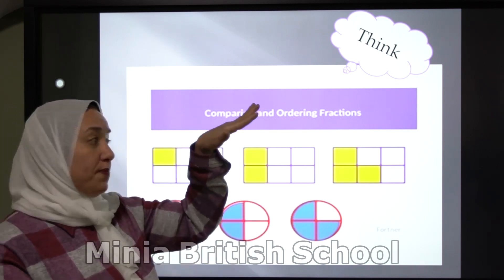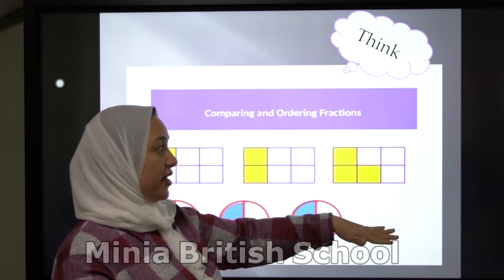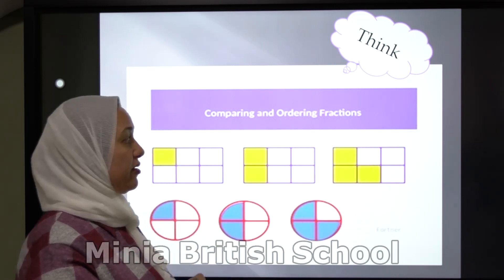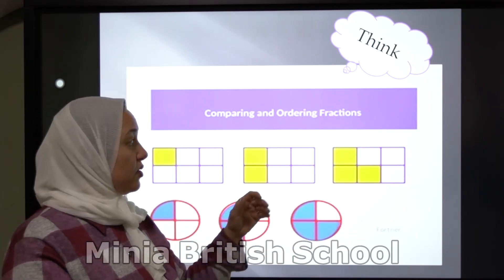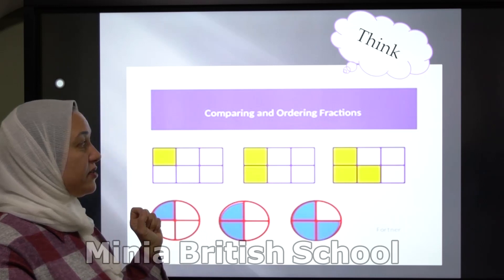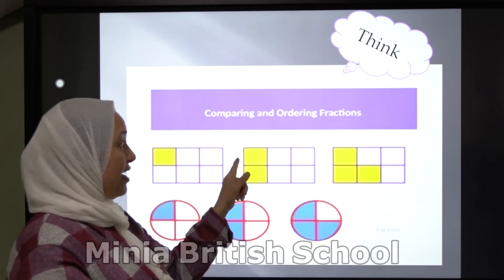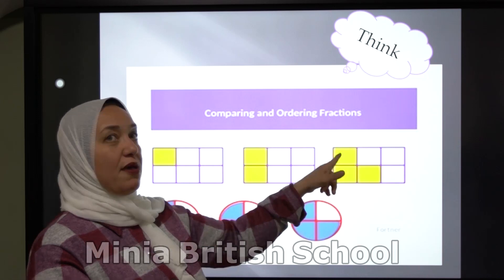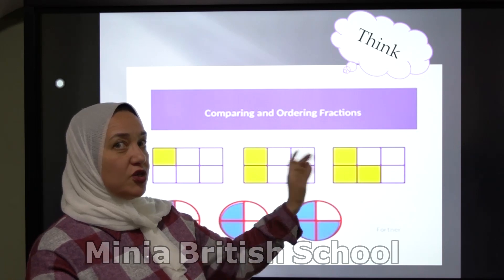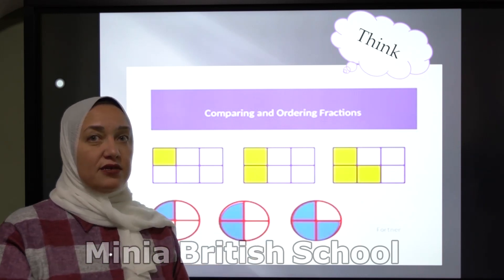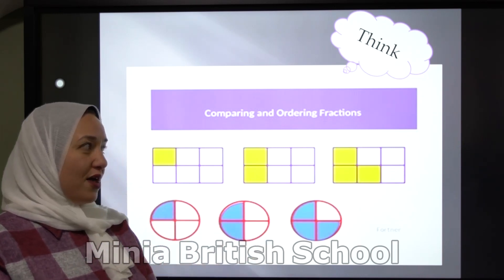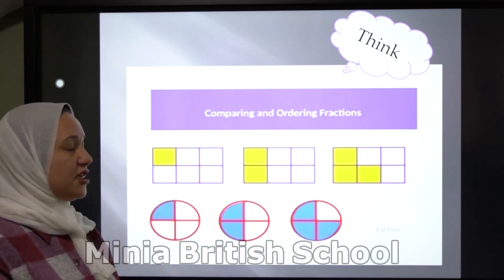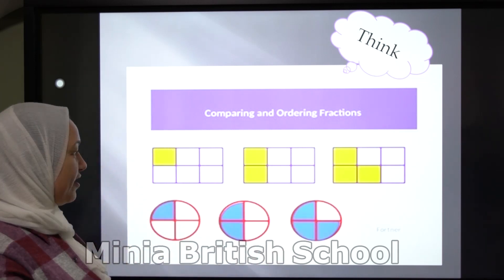The number on top is the colored part. The number on the bottom is all parts. Look at these figures — which one is bigger? 3 over 6 bigger than 2 over 6, or 2 over 6 bigger than 3 over 6? Yes, it's 3 over 6 bigger than 2 over 6.